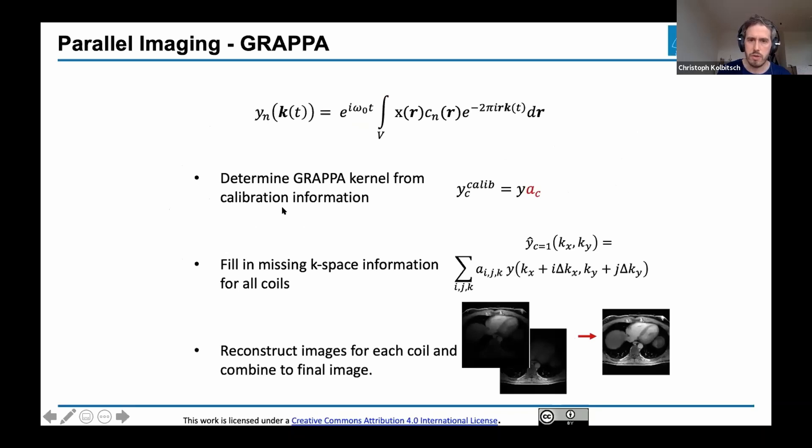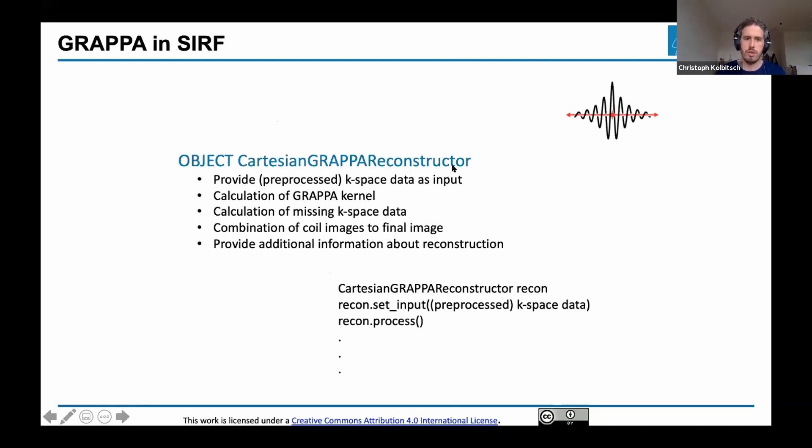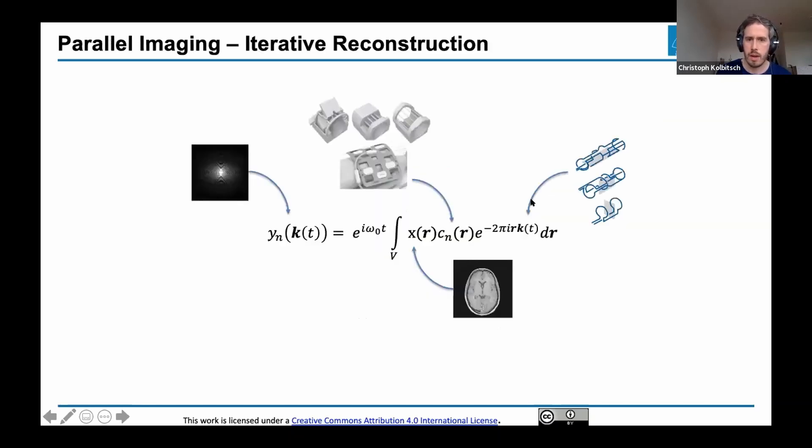There are quite a few steps involved in GRAPPA. First, I determine the calibration lines and calculate calibration information. Then I fill in the missing k-space lines with this information, reconstruct an image, get an image for each coil, then combine it to one final image. Luckily, we don't have to do any of that because it's already part of Gadgetron and SIRF. There's an object which is a Cartesian GRAPPA reconstructor that just needs the preprocessed k-space data, and you can say process and it does everything.